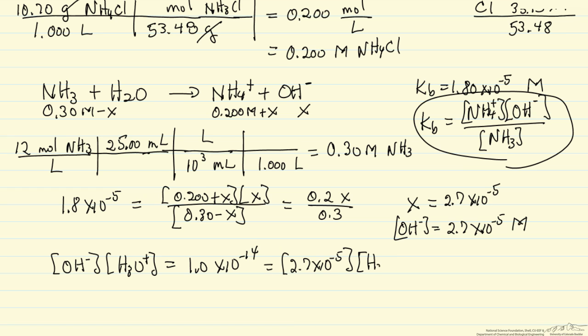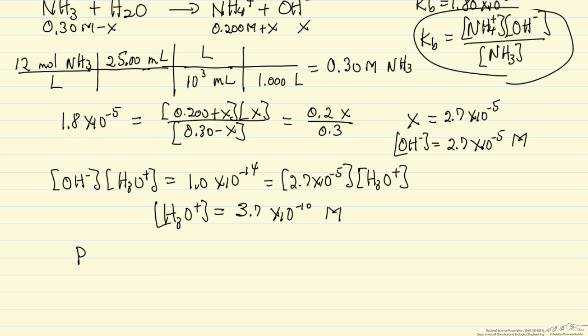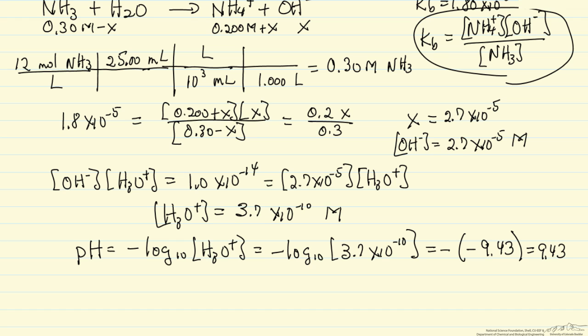So we can solve for H3O plus concentration. If we do that, we end up with the hydronium ion concentration. We can get the pH minus the log base 10 of hydronium ion concentration. So this becomes 9.43 for the pH.